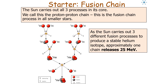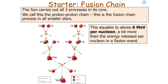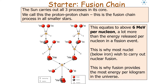As the sun carries out the three different fusion processes to produce a stable helium isotope, one chain process releases about 25 MeV, which equates to about 6 MeV per nucleon — a lot more than the energy released per nucleon in a fission event. This is why most nuclei below iron carry out nuclear fusion, and why fusion provides the most energy per kilogram in the universe.